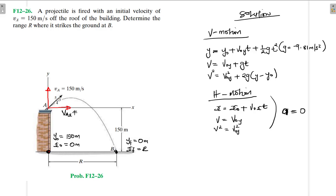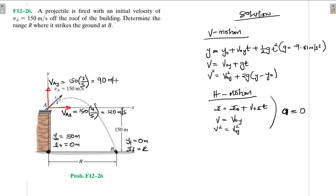The initial horizontal velocity v_ax equals 150 times 4/5, which gives us 120 meters per second. Then in the vertical direction, v_ay equals 150 times 3/5, giving us 90 meters per second. I think we've labeled everything that's required, so now let's work out this particular problem.